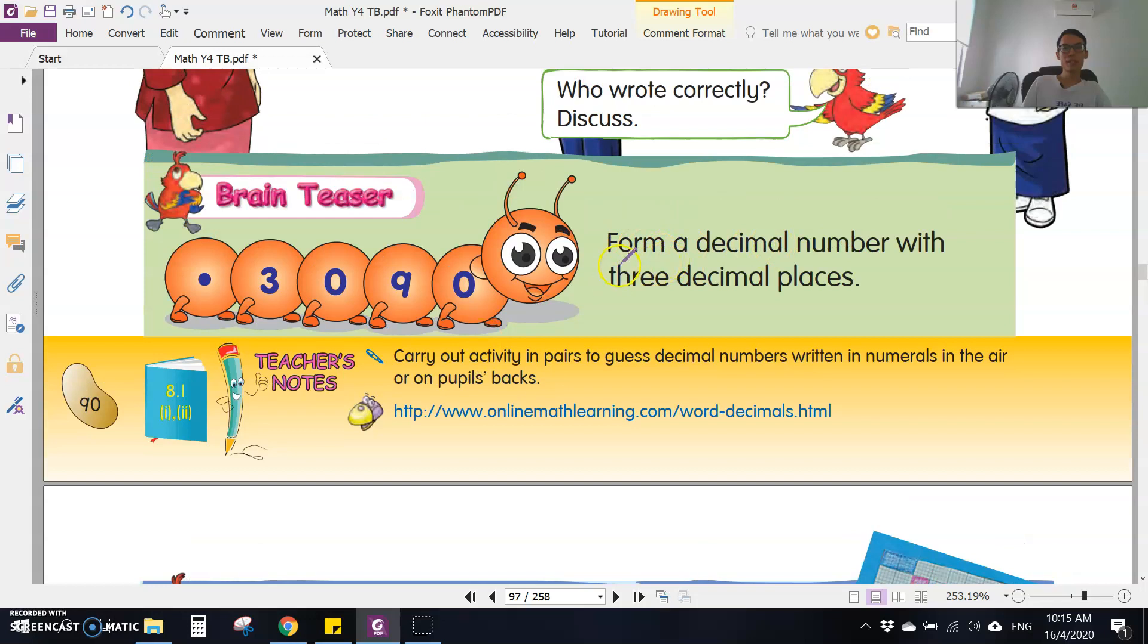Form a decimal number with three decimal places. Three decimal places means there are three digits behind the point, tiga nombor di belakang titik. So what we can do is put a three in front: 3.090. We have three digits behind, so this is three decimal places.